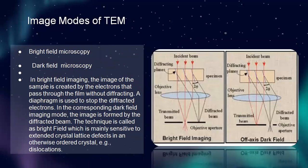Image modes of transmission electron microscope: bright field microscope and dark field microscope. In bright field imaging, the image of the sample is created by electrons that pass through the film without diffracting. A diaphragm is used to stop the diffracted electrons. In the corresponding dark field imaging mode, the image is formed by the diffraction beam. The technique called bright field is mainly sensitive to extended crystal lattice defects in an otherwise ordered crystal — for example, dislocations. You can see the diagram: this is bright field imaging and this is off-axis dark field.